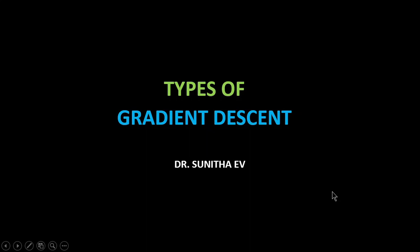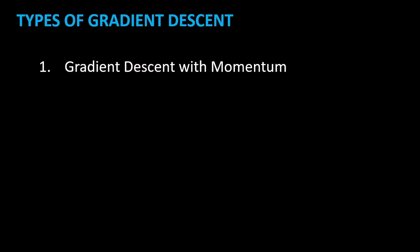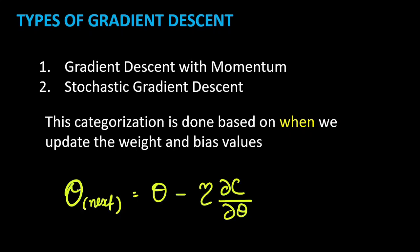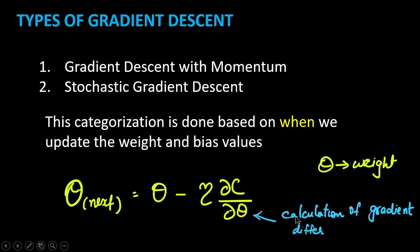We are going to see different types of gradient descent. The categorization is done based on when we update the weight and bias values. The weight adjustment equation for gradient descent is: theta_next = theta minus eta times (∂C/∂theta), where theta is the weight value and eta is the learning rate.